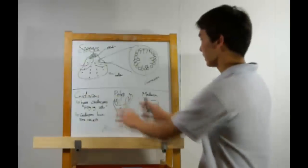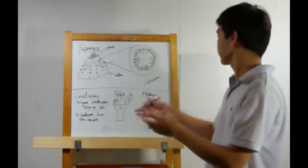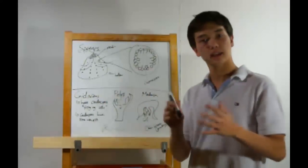The polyp will do this thing called budding. It will produce a medusa on top, which will ultimately float away and mature into another medusa. And that's how cnidarians work.